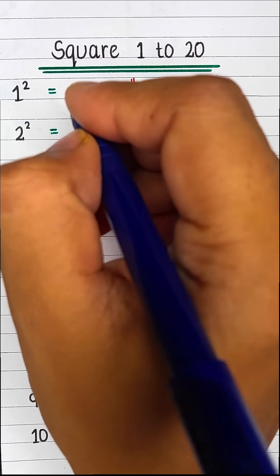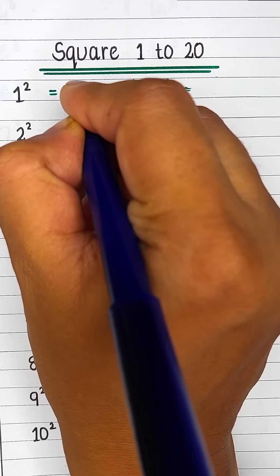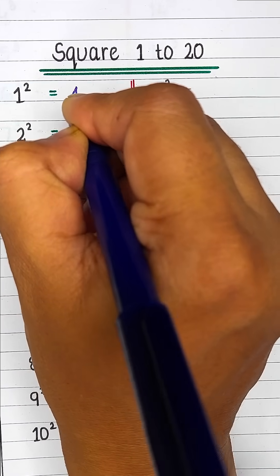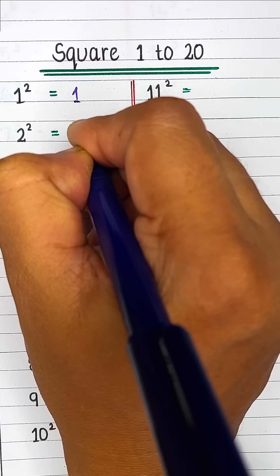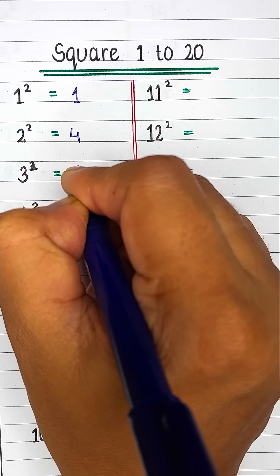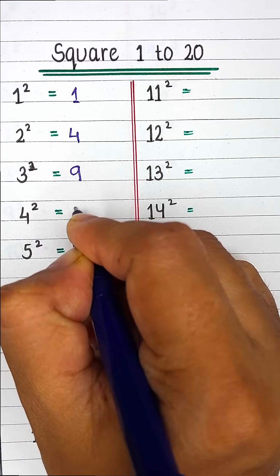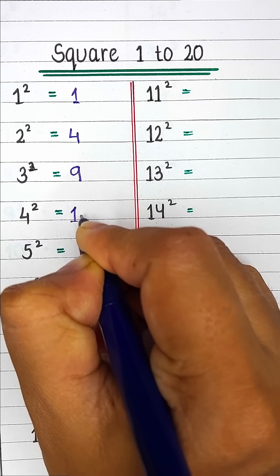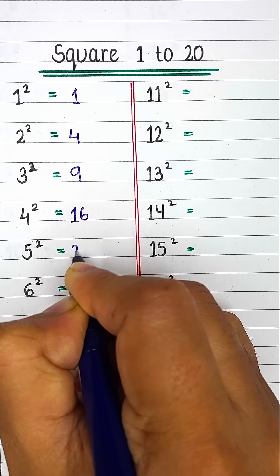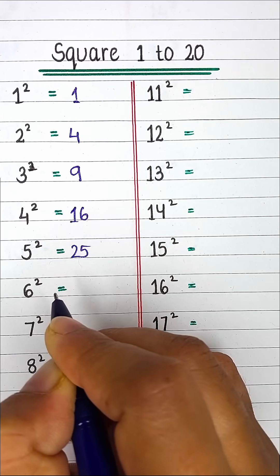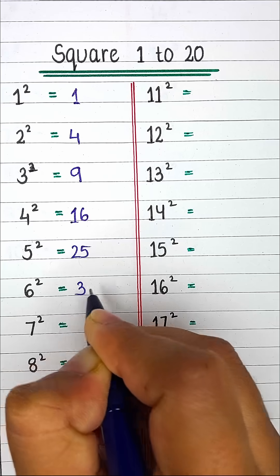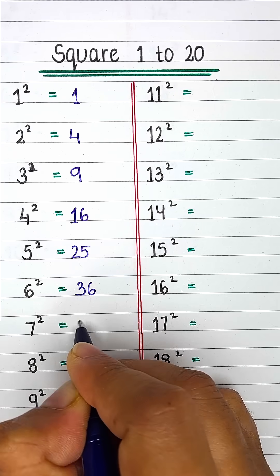Square of numbers from 1 to 20. Square of 1 is 1. Square of 2 is 4. Square of 3 is 9. Square of 4 is 16. Square of 5 is 25. Square of 6 is 36. Square of 7 is 49.